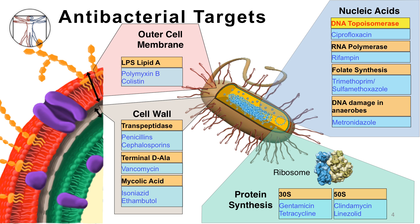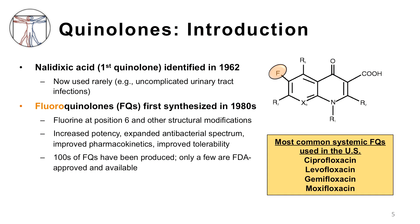The quinolones are depicted here in the upper right-hand corner, highlighted in the yellow box, as targeting a bacterial enzyme called DNA topoisomerase. Ciprofloxacin is listed as one representative example. Originally developed as quinolones in the 1960s, the later addition of a fluorine to the chemical structure — seen here highlighted in the orange circle — led to a change in nomenclature to the fluoroquinolones, a term used more commonly than quinolones in everyday clinical practice.